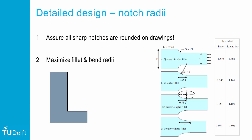Second, we have to maximize fillet and bend radii as much as possible. The larger the radius, the lower the stress concentration. The fillets illustrated here on the right-hand side illustrate that improvements can be made in several ways.